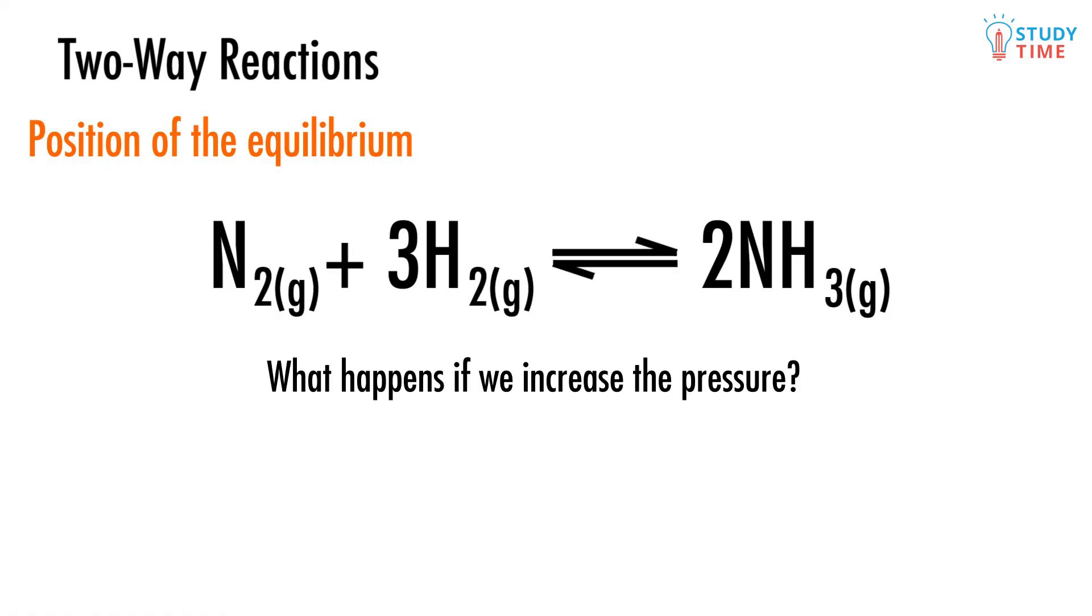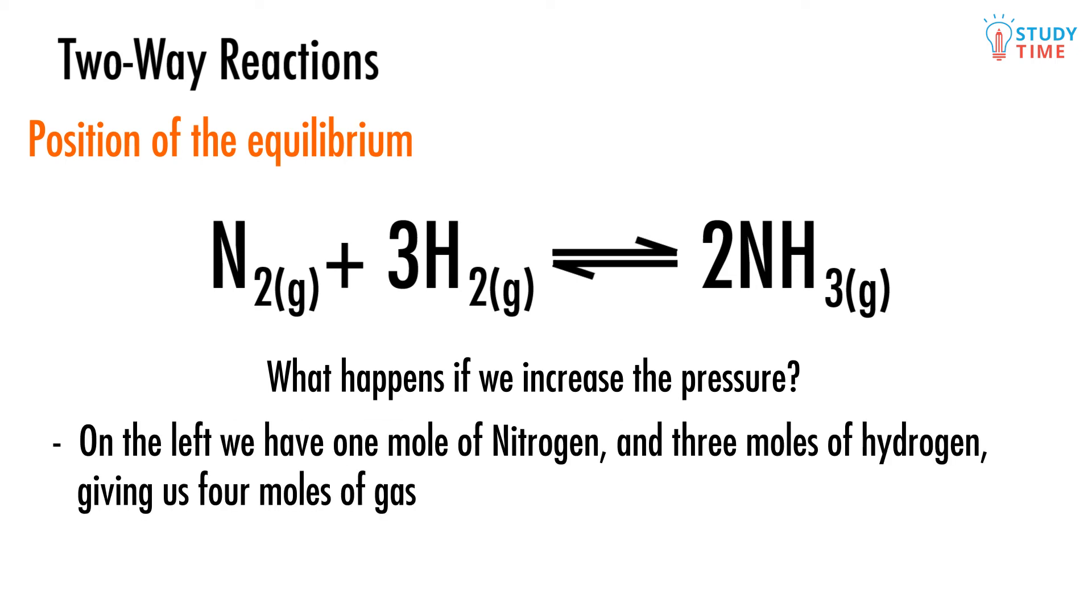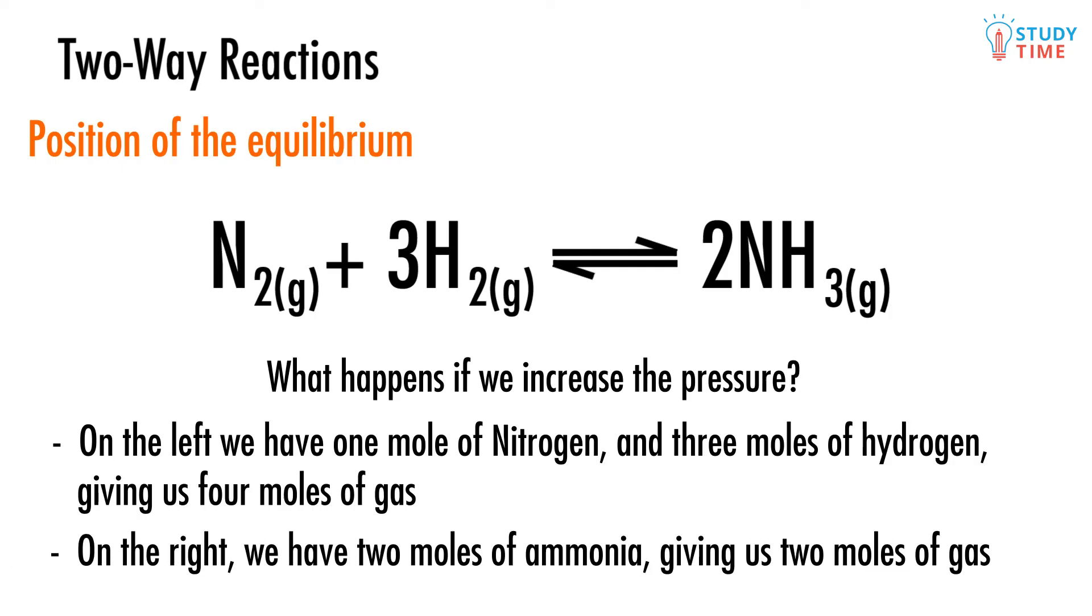What happens if we increase the pressure? This is a little more complicated, we're sorry to tell you. Pressure is about two things: which reactants and products are gas and how many moles of gas there are on each side. This question isn't too hard to answer in this case because everything is a gas. So on the left we have one mole of nitrogen and three moles of hydrogen giving us four moles of gas. On the right we have two moles of ammonia giving us two moles of gas.